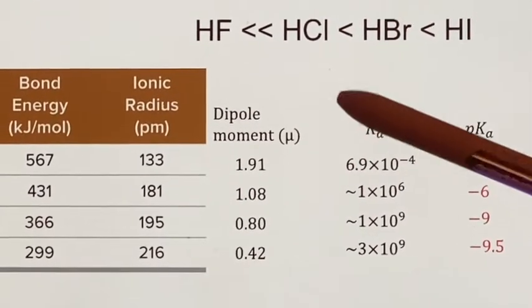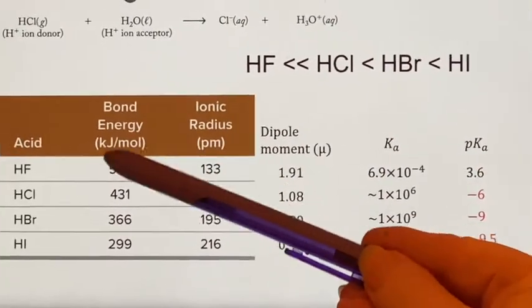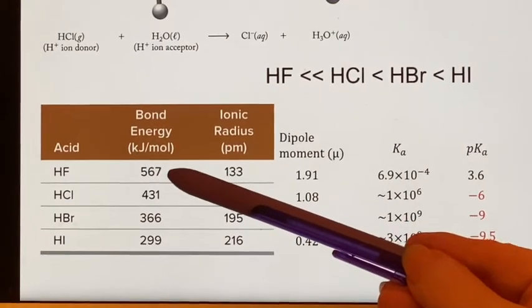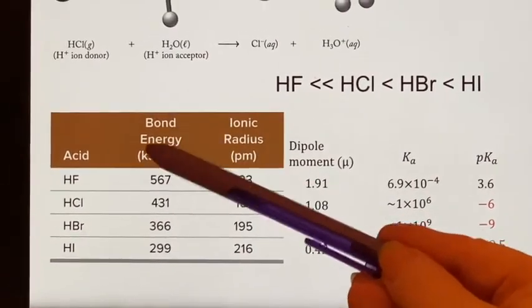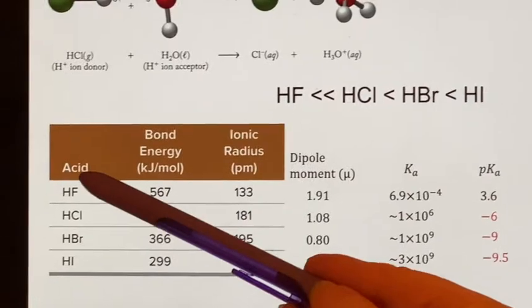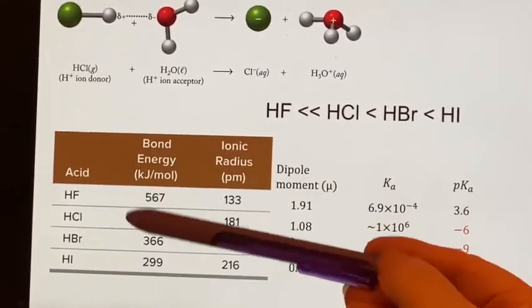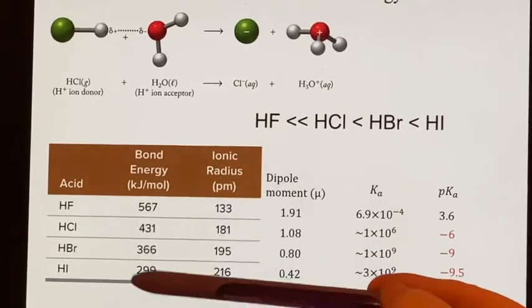They were talking about the bond dissociation energy. This has a very high bond dissociation energy. They're simply talking about it in terms of the acid itself without talking about where is that proton going.